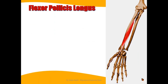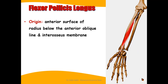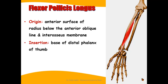The flexor pollicis longus — 'pollicis' referring to the thumb — originates from the anterior surface of the radius below the anterior oblique line, and also from the interosseous membrane. Its tendon is inserted at the base of the distal phalanx of the thumb, and its action is to flex the joints of the thumb.